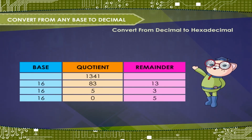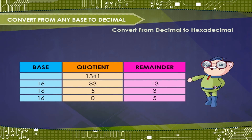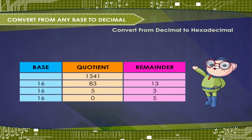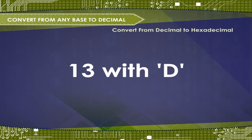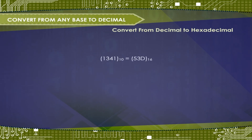For example, convert the decimal number 1341 to hexadecimal notation. Replace 13 with D while writing the answer. So the answer is 1341 base 10 is equal to 53D base 16.